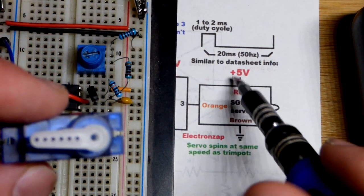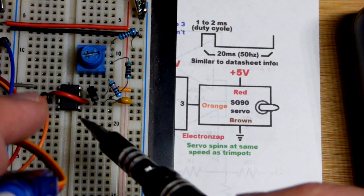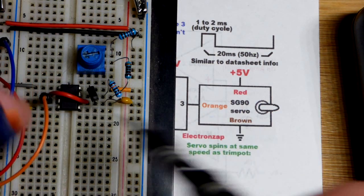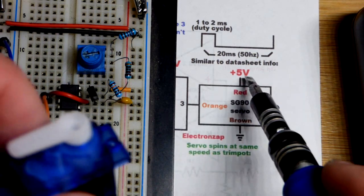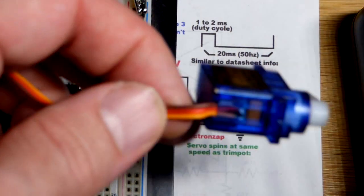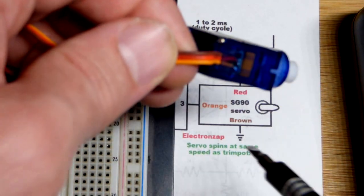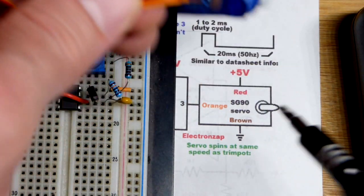We have the 555 timer outputting a signal that's going to go there. To power it you just directly connect that to the positive supply. Brown is ground or the negative supply, and red is the positive supply.